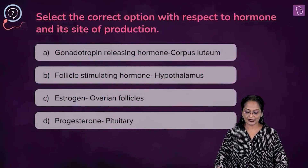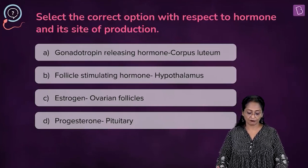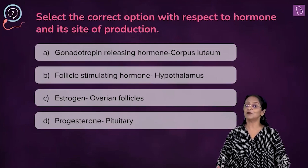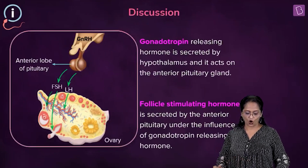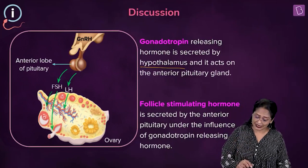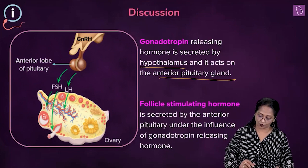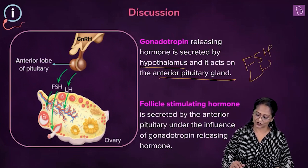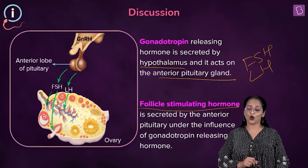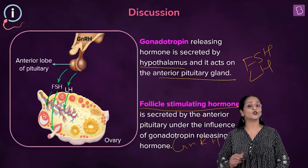A new question: select the correct option with respect to hormone and its site of production. A — gonadotropin-releasing hormone from corpus luteum; B — follicle-stimulating hormone from hypothalamus; C — estrogen from ovarian follicles; D — progesterone from the pituitary. The gonadotropin-releasing hormone, or GnRH, is secreted by the hypothalamus, and acts upon the anterior pituitary gland to stimulate it to secrete gonadotropins — the FSH and the LH. FSH is secreted by the anterior pituitary gland under the influence of GnRH.